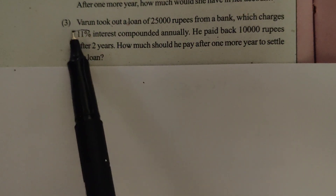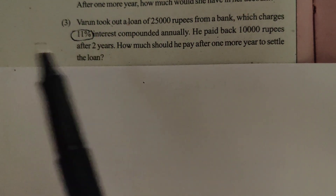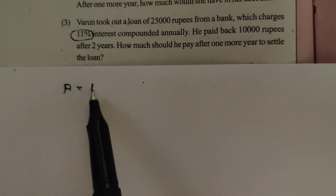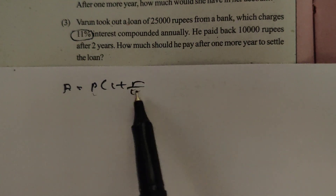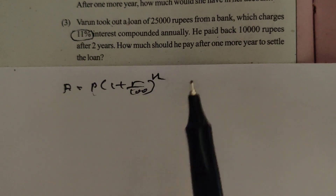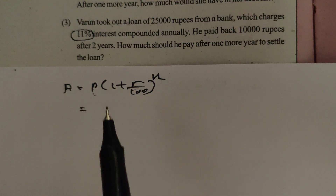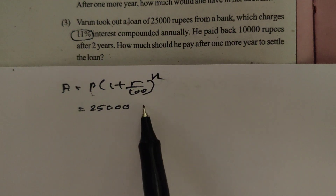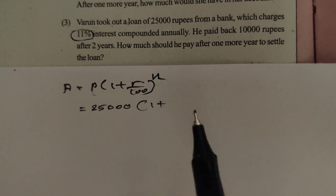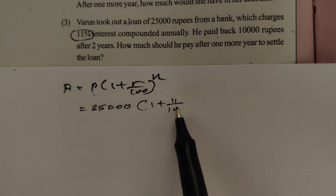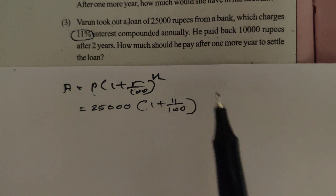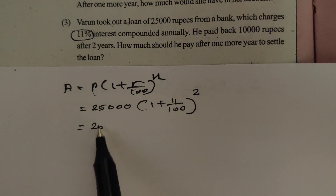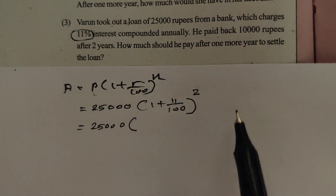Now a problem with 11% interest. The amount is equal to P × (1 + R/100)^N. Here P is 25,000, R is 11%, and N is 2 years. So the calculation is 25,000 × (1 + 11/100)^2.